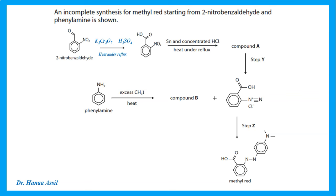Taking that compound with the nitro group on the benzene ring, we add tin in the presence of concentrated HCl under heat and reflux. Remember, tin with HCl changes the nitro group to an amino group. We then convert this amine to a diazonium salt by adding sodium nitrite in the presence of HCl at 5°C.